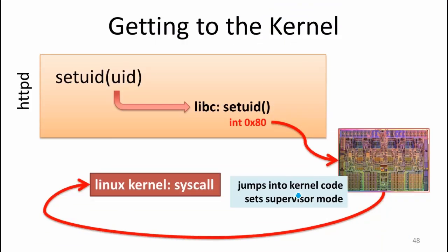So we started in Apache and called this function defined in libc, which is just a wrapper around some assembly code, which eventually does this interrupt. The interrupt is now causing an interrupt in the processor, which is going to get handled by the kernel. When it gets handled by the kernel, we're going to jump into supervisor mode and run some code in the kernel that does the actual setuid.